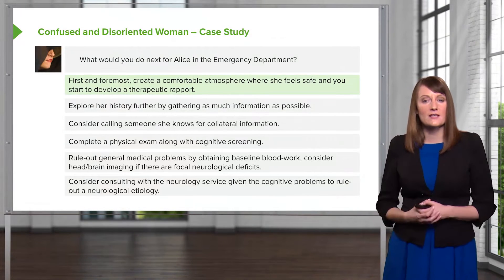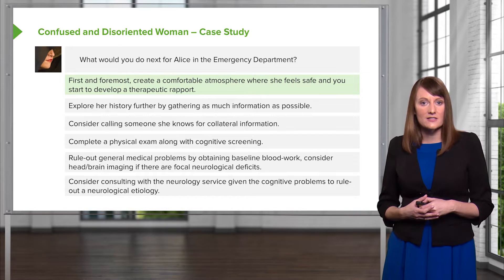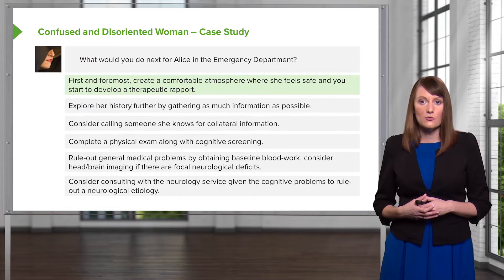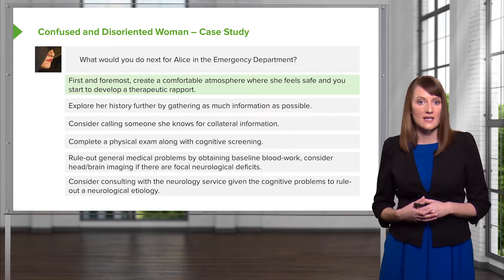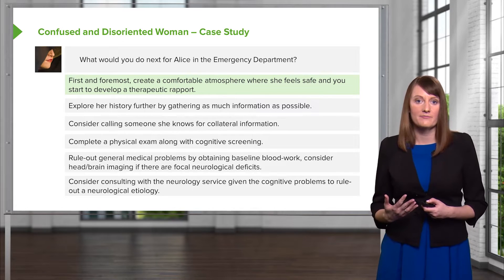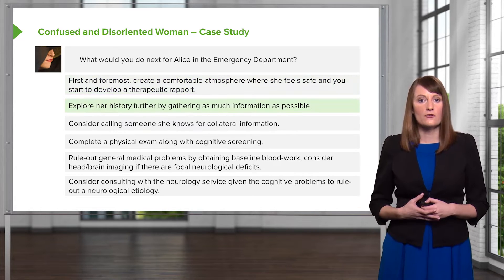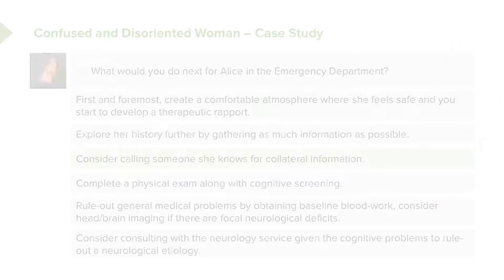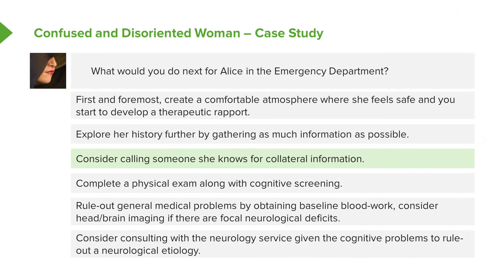So what would you do next in the emergency department to assess Alice? First and foremost, you want to create a comfortable atmosphere where she feels safe and start to develop that ever-important therapeutic alliance. Explore her history further by gathering as much information from her as possible. Consider calling someone she knows for collateral information — ask for her permission to reach out and ask for a phone number of a close family member or friend.